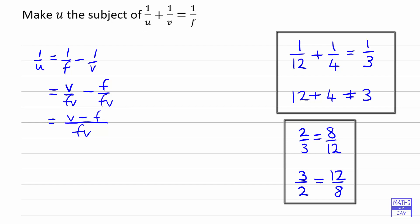We have written one over U as something over something. So it looks a bit like two thirds is eight over twelve. And then we can turn both sides upside down. We're doing the same to both sides, we're taking the reciprocal of both sides. So we can say that U over one is equal to FV over V minus F.